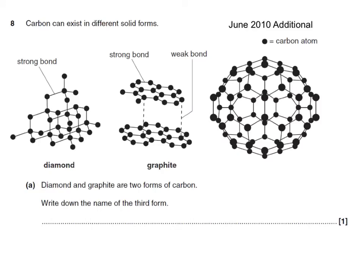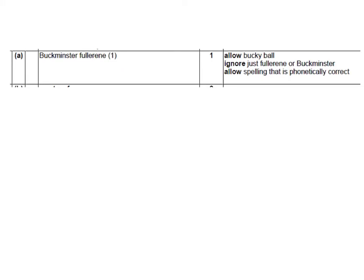Here's a past paper question: Carbon can exist in different solid forms. We have diamond and we have graphite — these are two forms of carbon. Write down the name of the third form. This would be Buckminsterfullerene. You do need to know the full name because it says to ignore just 'Fullerene' or 'Buckminster' alone.